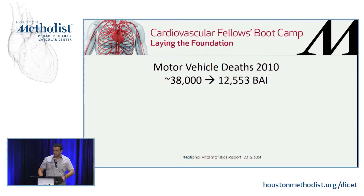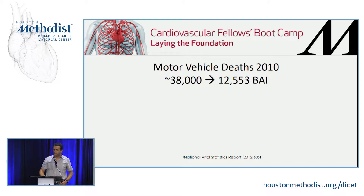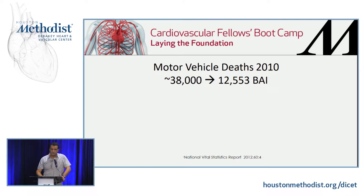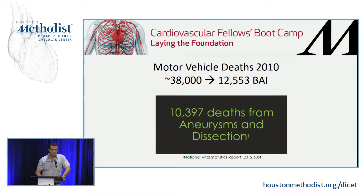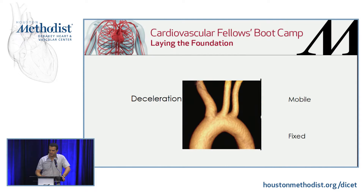So it's a big problem. From the 2010 National Vital Statistics Report, there were 38,000 motor vehicle deaths, and 12,500 were from blunt aortic injuries — that's more than what we see from dissection and aneurysm. It's all about fixed points and acceleration-deceleration injury in these cases.